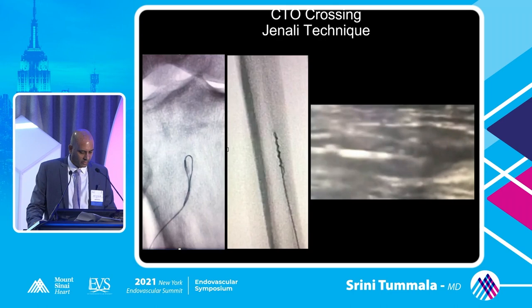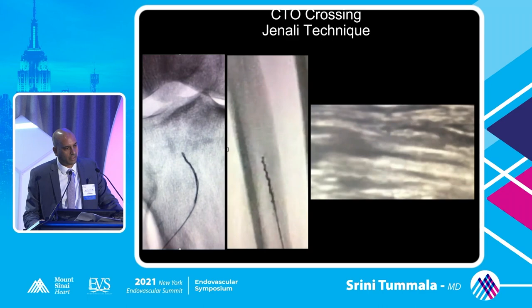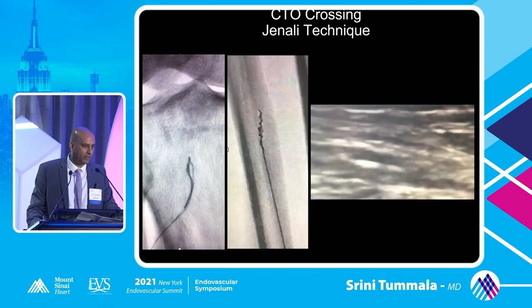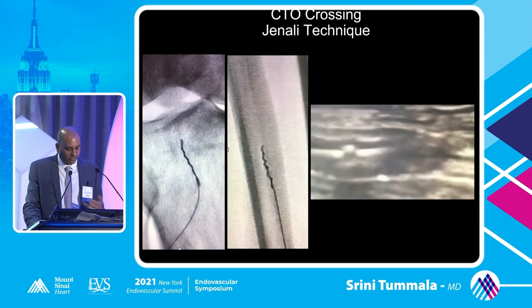There's also the Janali technique, described by Jihad Mustafa, where he uses a CTO catheter and an 0.018 hydrophilic tip guide wire — classically a V18. He prolapsed it, rotates it, creating almost a corkscrew appearance. Under extravascular ultrasound you can see the rotation happening, basically like a drill. It's another technique for crossing CTOs.